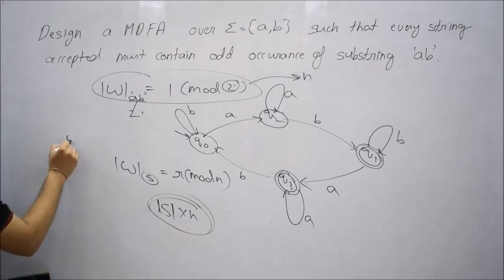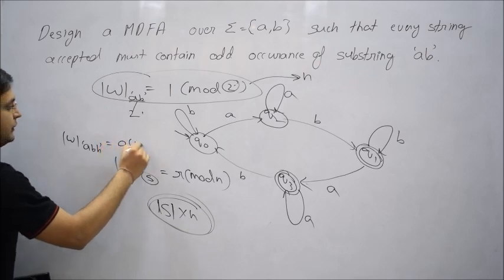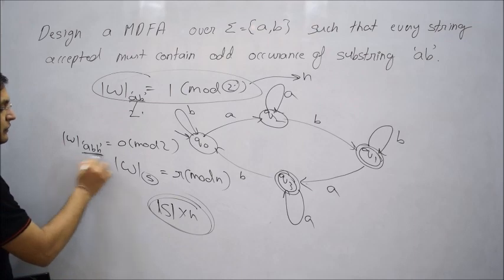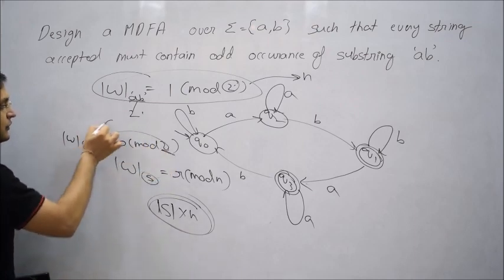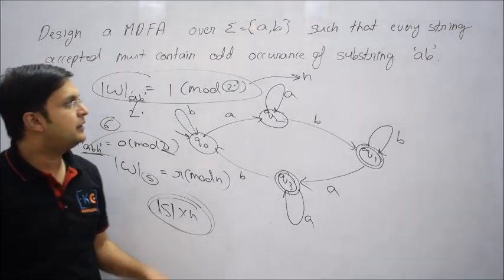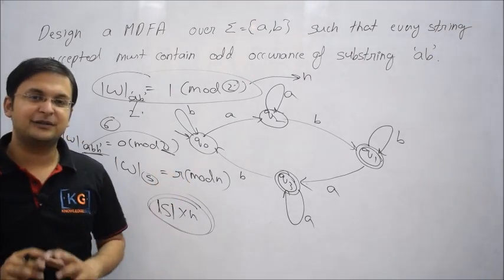If somebody asks you, I want to count ABB with a pattern 0 mod 2, how many states will be there? Length is 3 and it is 2, then 3 cross 2 total 6 states will be there. That is a kind of different framework where you can also work on mod architecture. I hope you understand the logic. Thank you.